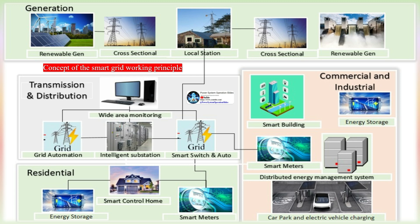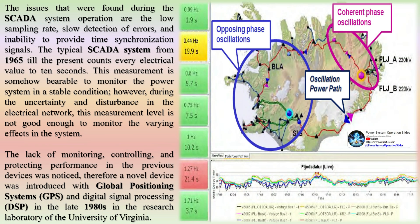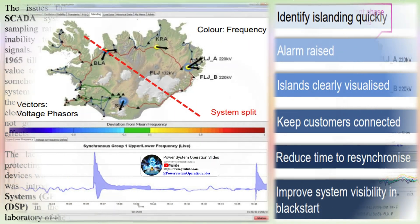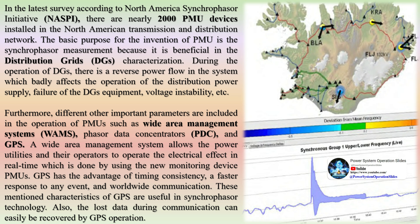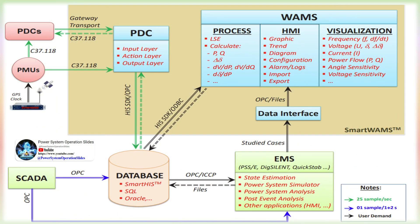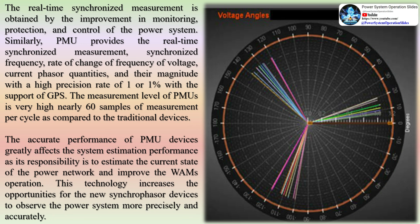A wide area management system allows power utilities and their operators to operate the electrical grid in real time using the new monitoring device PMUs. GPS has the advantage of timing consistency, a faster response to any event, and worldwide communication. These characteristics of GPS are useful in synchrophasor technology. Also, lost data during communication can easily be recovered by GPS operation. WAMS are based on the new data acquisition technology of phasor measurement and allow monitoring transmission system conditions over large areas to detect and counteract grid instabilities. Current, voltage, and frequency measurements are taken by PMUs at selected locations and stored in a data concentrator (PDC) every 100 milliseconds. The measured quantities include both magnitudes and phase angles and are time-synchronized via GPS receivers with an accuracy of 1 microsecond.